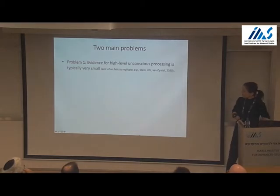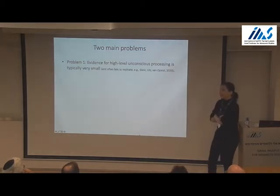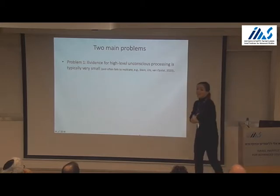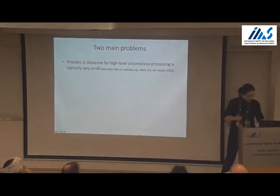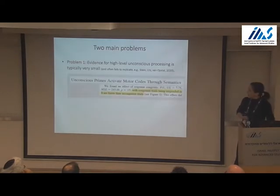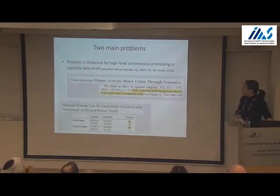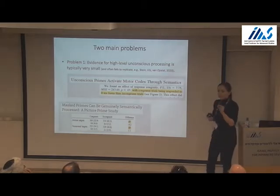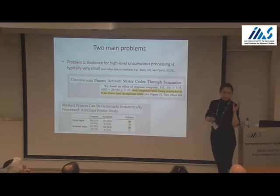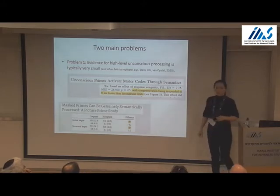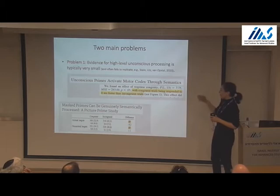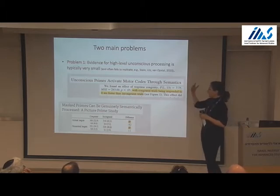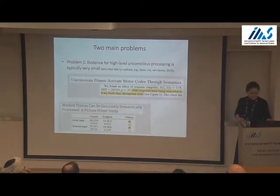The first reason is that, as Liat showed us, the effects of unconscious processing and especially of high-level unconscious processing are usually very small. Unconscious processing effects of less than 10 milliseconds are the rule. And nevertheless, the interpretation is very striking: unconscious primes activate motor codes through semantics; masked primes can genuinely be semantically processed. In a picture prime study, we see a maximum of 8-9 milliseconds.